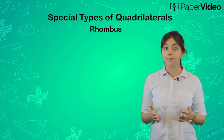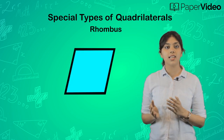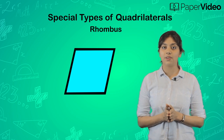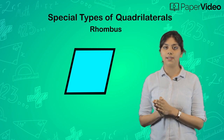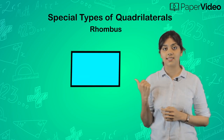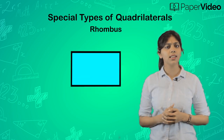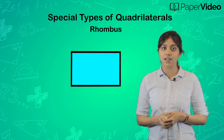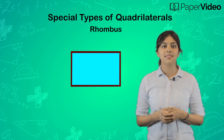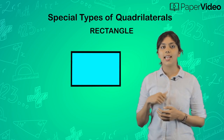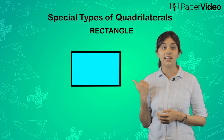Now suppose we have a parallelogram such that all the angles of this parallelogram are equal to 90 degrees. Then what do we call such types of parallelograms? They are known as rectangles. In this rectangle, all four angles are equal to 90 degrees.